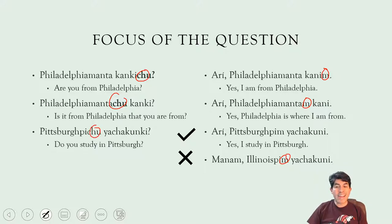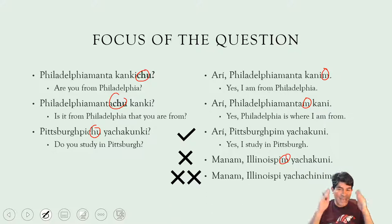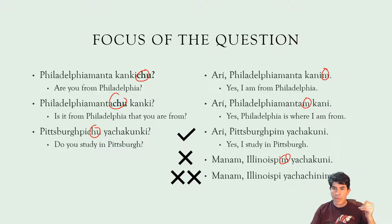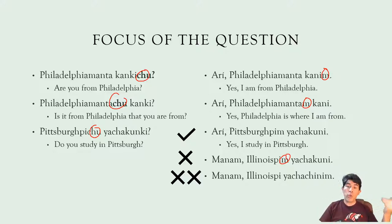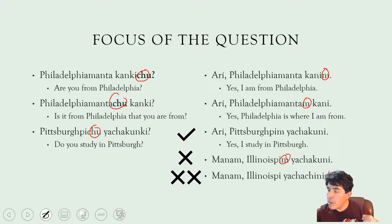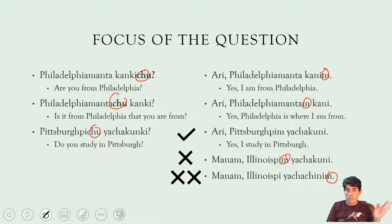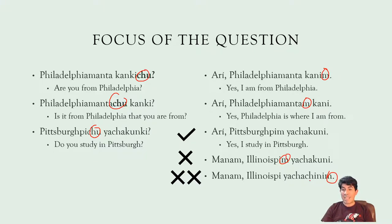However, it is possible that nothing in the question you heard is correct — maybe you don't study in Pittsburgh, and what you do is not study but teach. In that case you can negate everything with 'manam' and then give the correct statement from scratch. So 'Pittsburgh-pichu yachakunki?' — 'manam, Illinois-pim yachachinim' — no, I teach in Illinois. When you give totally new information correcting the question, you mark M or ME with the main verb, because you are restarting the whole statement.